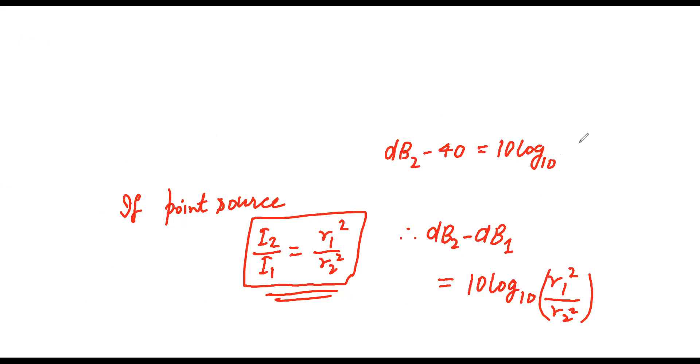dB2 minus dB1. R1 was 5 meters, right? And how much was R2? 50. So 10 log to the base 10, this is 1 by 10 square, so 10 to the power minus 2. 10 log to the base 10, 10 to the power minus 2. So this is minus 2, so minus 20. dB2 minus 40 equals minus 20. dB2 equals 20. This will be the answer. Did you understand? Simple? Yes sir. Good.